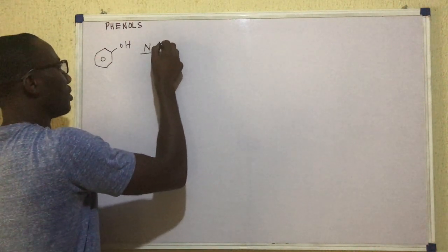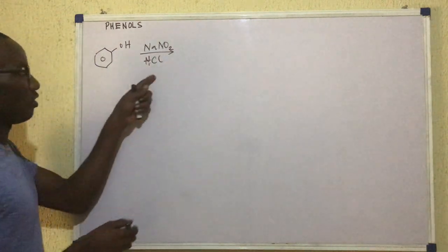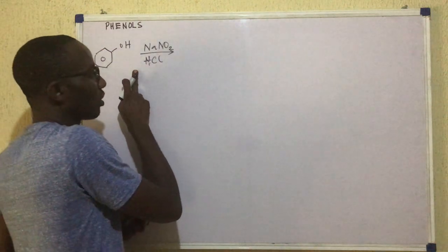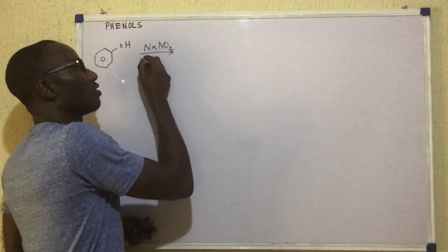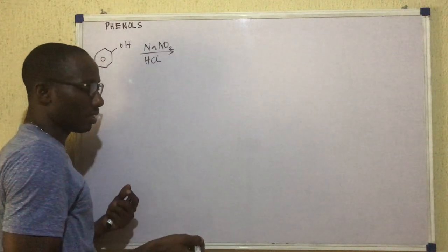Our HNO2 may also be written as NaNO2 and HCl. Of course, if these two were to react, they would give us HNO2. So if we see this reaction like this, or we see it written as HNO2 on the arrow, it would be the same thing.